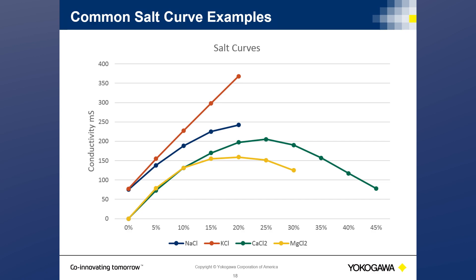Every chemical and mixture has its own conductivity versus concentration curve and they all respond differently. The graph shown here uses our brine example, showing the correlation between conductivity and concentration for four commonly used salts. Some curves have a peak conductivity value before their saturation point — look at the calcium chloride or magnesium chloride curve. They go up, peak, and then come back down before the solution is fully saturated. So conductivity responds one way up to the peak, and then as concentration increases further, it actually goes back down.